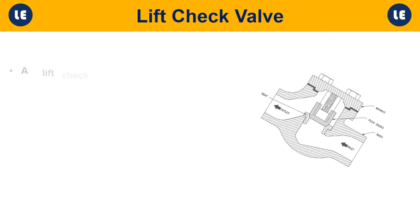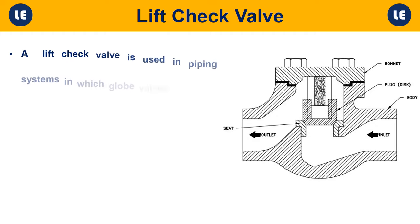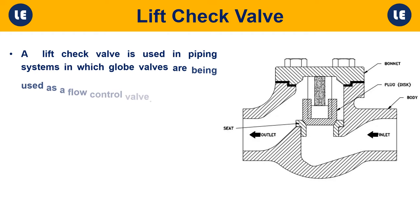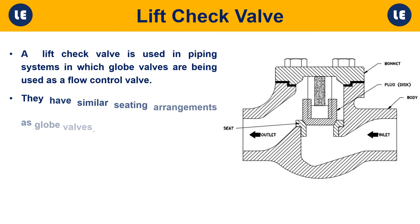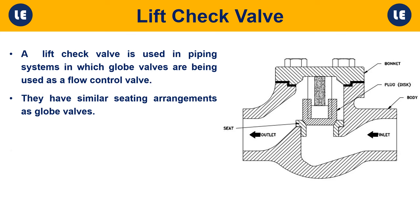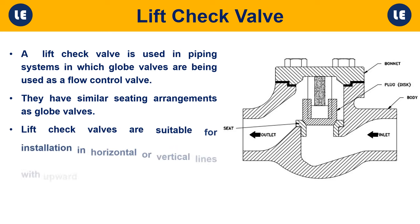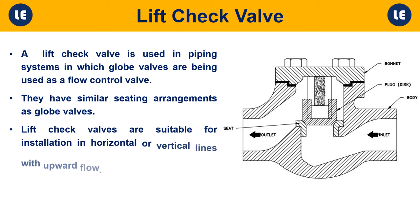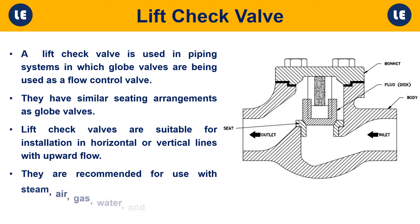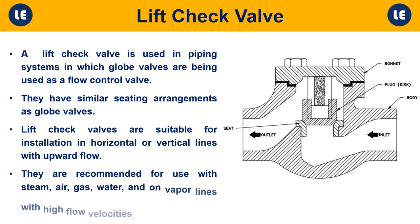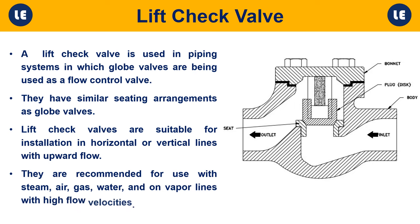Lift check valve: A lift check valve is used in piping systems in which globe valves are being used as a flow control valve. They have similar seating arrangements as globe valves. Lift check valves are suitable for installation in horizontal or vertical lines with upward flow, and are recommended for use with steam, air, gas, water, and vapor lines with high flow velocities.